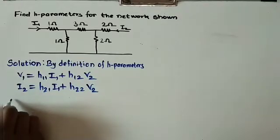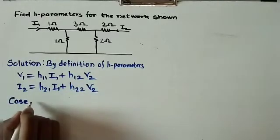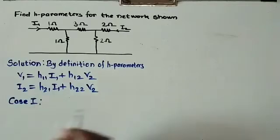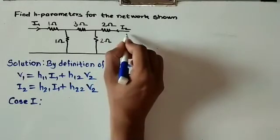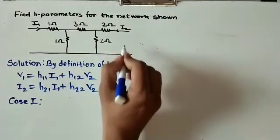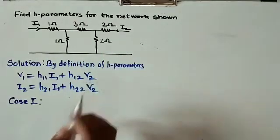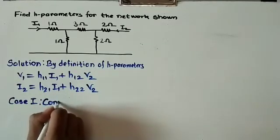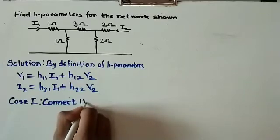For Case 1, we set v2 equals 0 by short-circuiting port 2. Since v2 is the voltage at port 2, we short-circuit port 2, making v2 equal to zero.